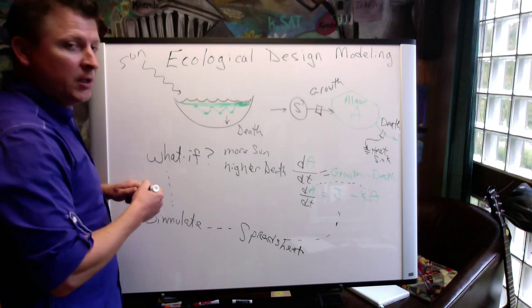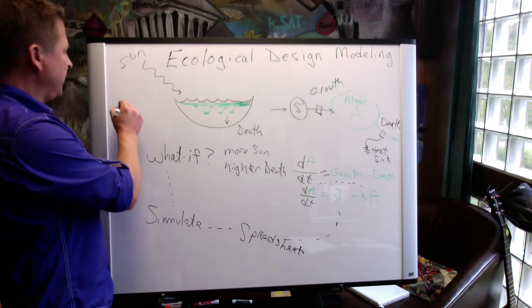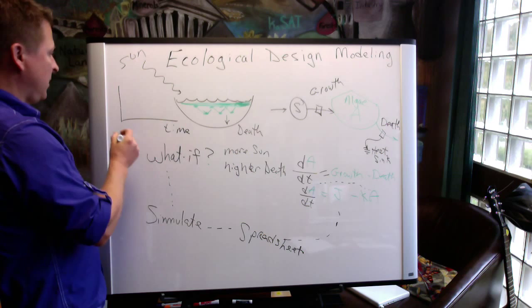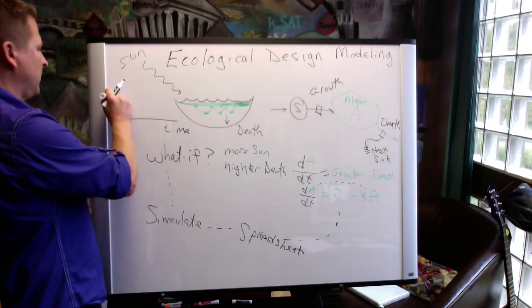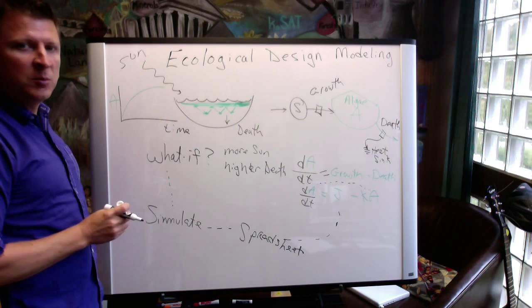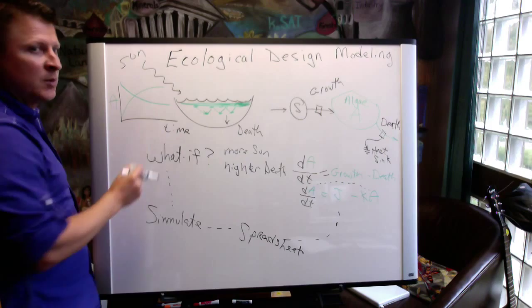So what we'll be able to do with our model is plot the change or the storage over time. So we'll be able to make time series graphs of A, our storage. Maybe it's increasing over time, or possibly death is higher than growth and we might see that it declines over time.